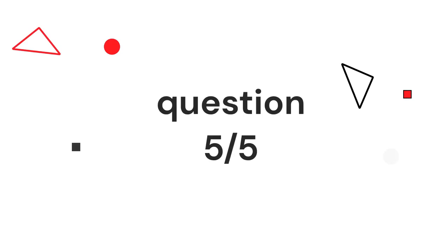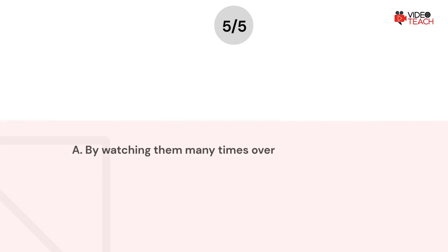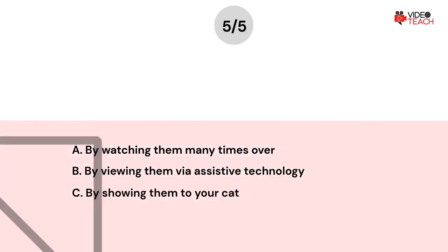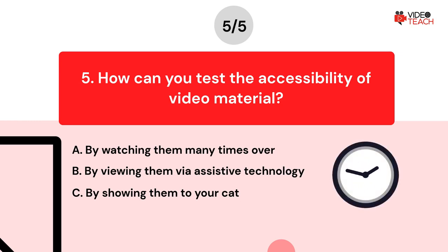Question number five. How can you test the accessibility of video material? Option A: By watching them many times over. Option B: By viewing them via assistive technology. Option C: By showing them to your cat. Now you have about 15 seconds to think about your answer.